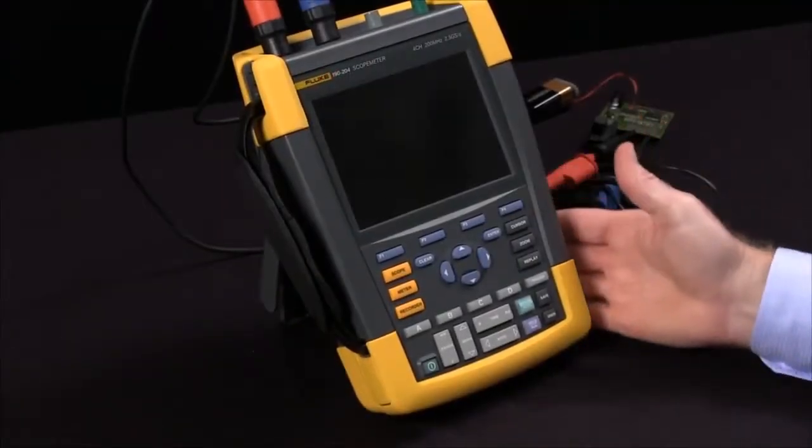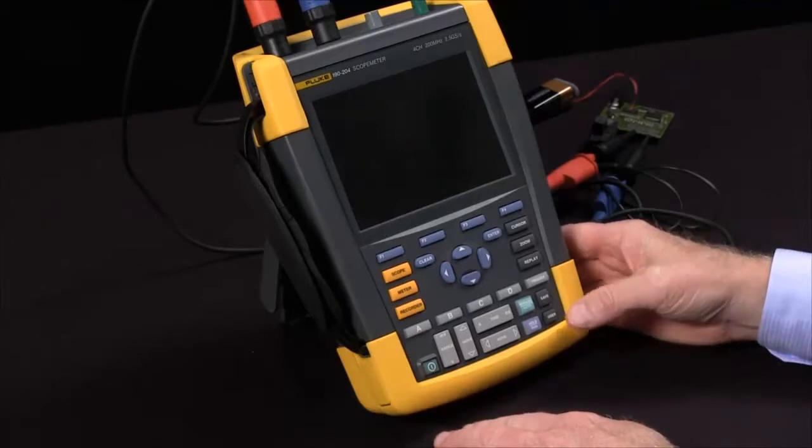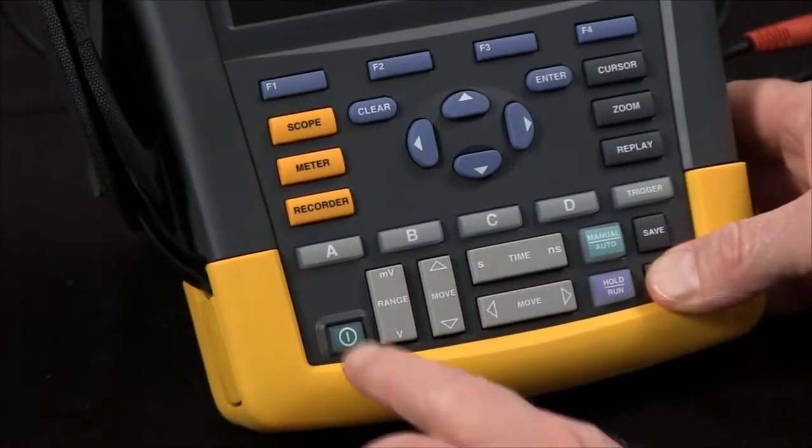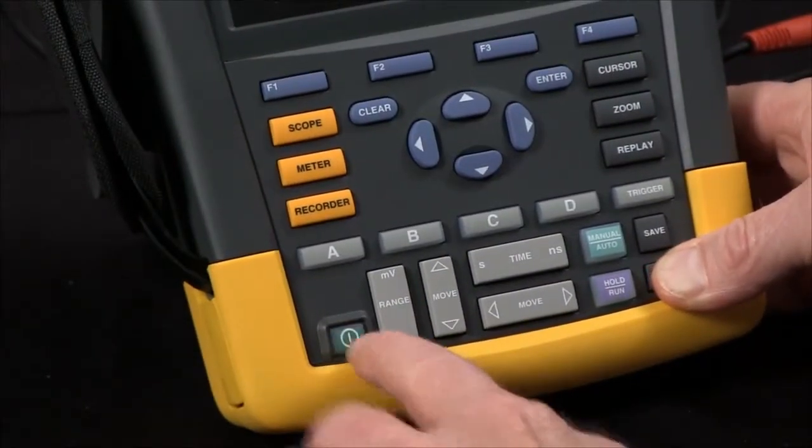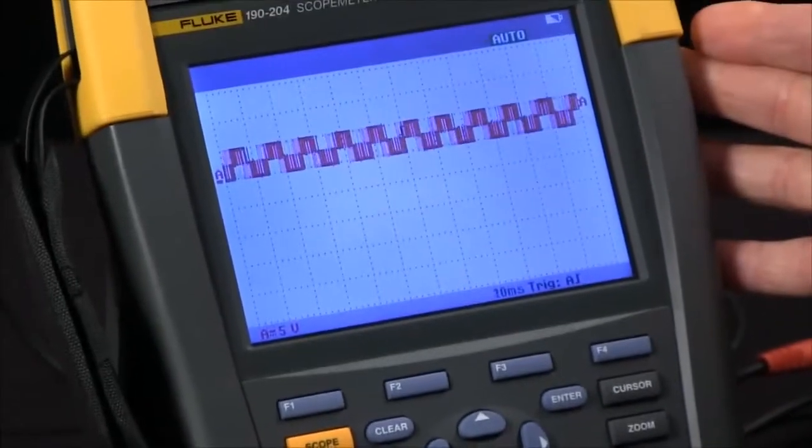In this video, we're going to talk about how to reset the scope meter and just some basic setup. We'll start by holding down the user key as we press and release the power button. The unit will beep twice and come up with factory default settings.